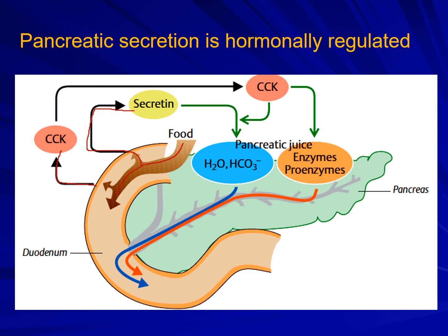Other actions of secretin include stimulating bile secretion, potentiating the effect of CCK on the pancreas, and working in collaboration with CCK to produce optimal pancreatic juice secretion. Along with CCK, secretin is also responsible for causing contraction of the pyloric sphincter, meaning it delays gastric emptying and thus prevents reflux of duodenal contents back into the stomach.